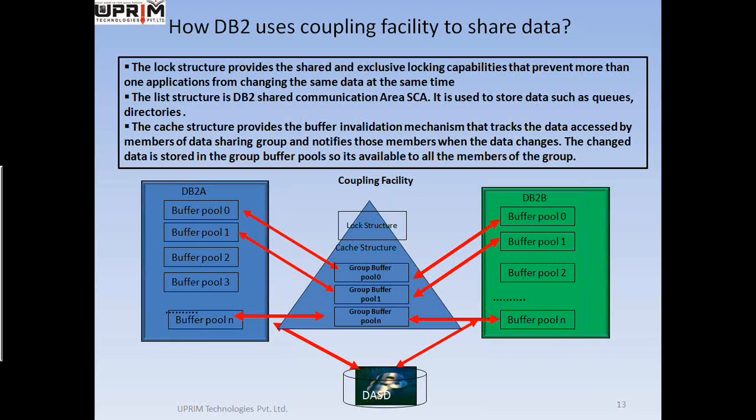To ensure that two DB2 subsystems don't update the same data at the same time, the coupling facility includes the lock structure. Look at the first rectangle on the triangle given in the center of your screen, which is talking about the lock structure. The lock structure actually provides shared and exclusive locking capabilities like those provided by DB2. If you understand DB2 locking, then you won't have any trouble understanding the function of the lock structure.